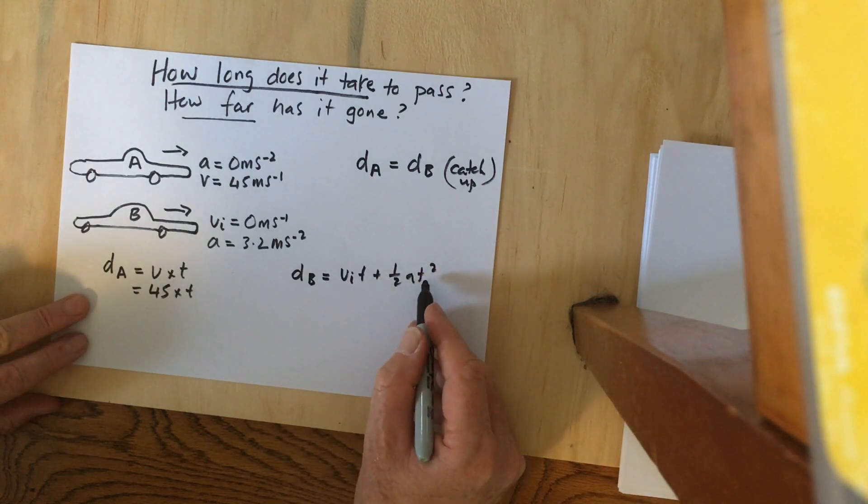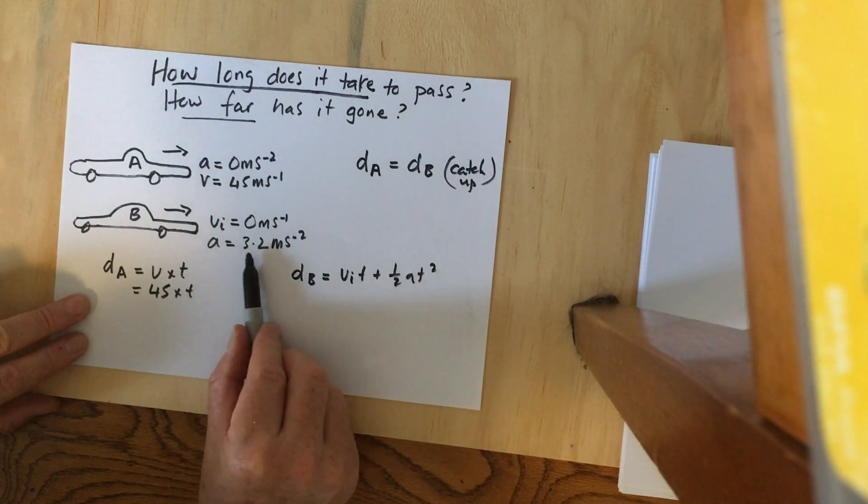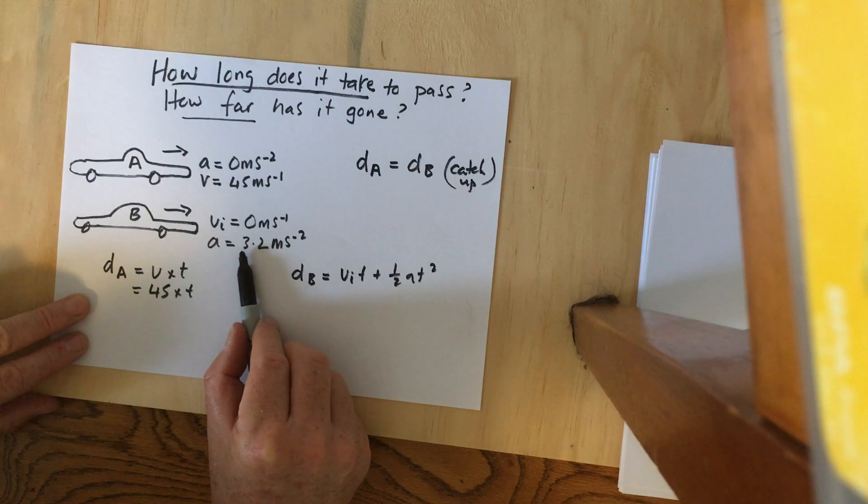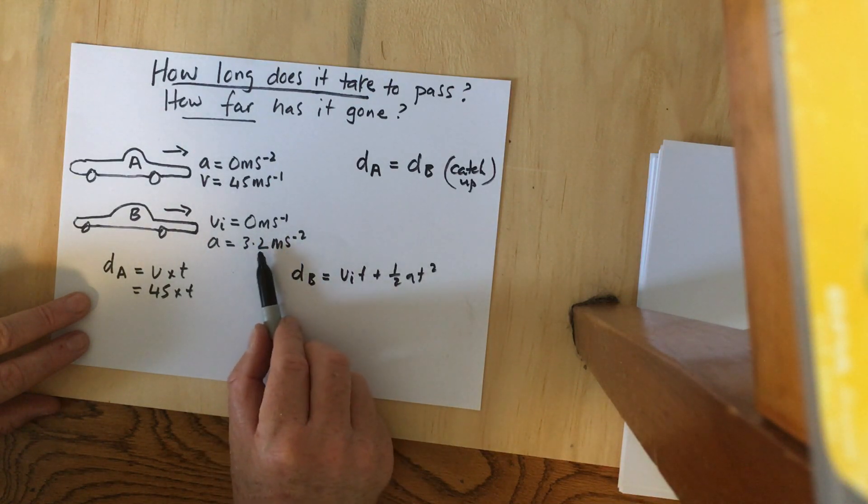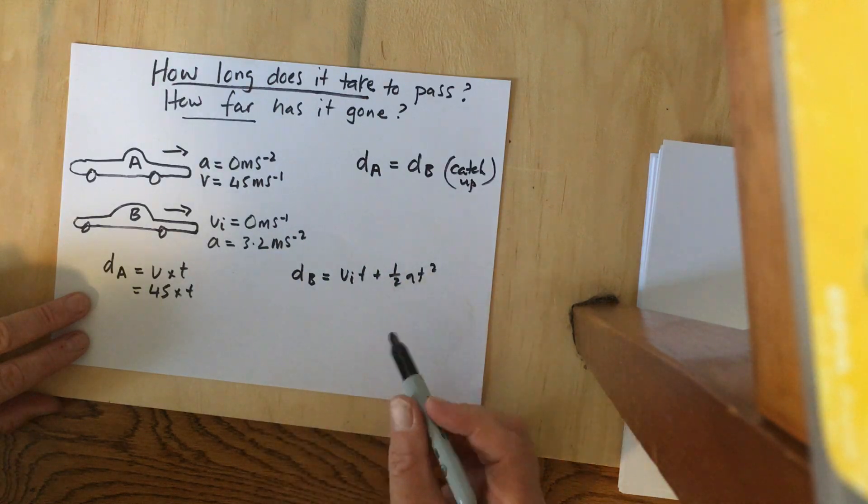I use this kinematic equation because the acceleration is constant and not zero. When acceleration is constant and present in the equation, we must use a kinematic equation.